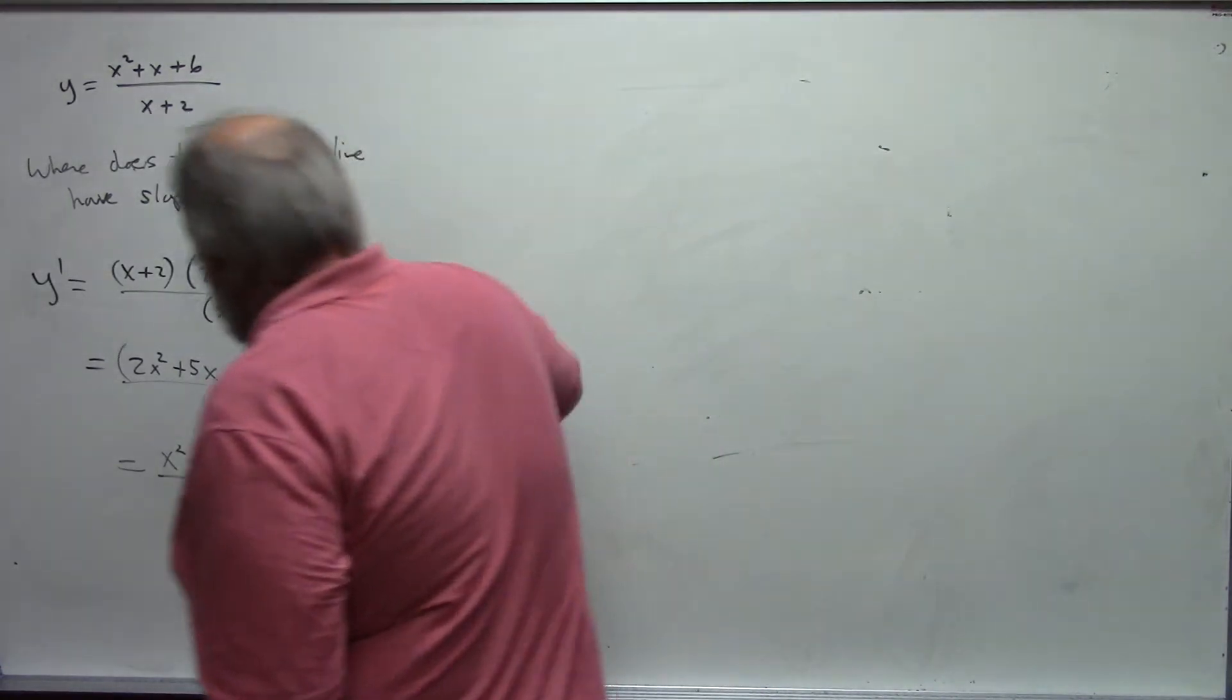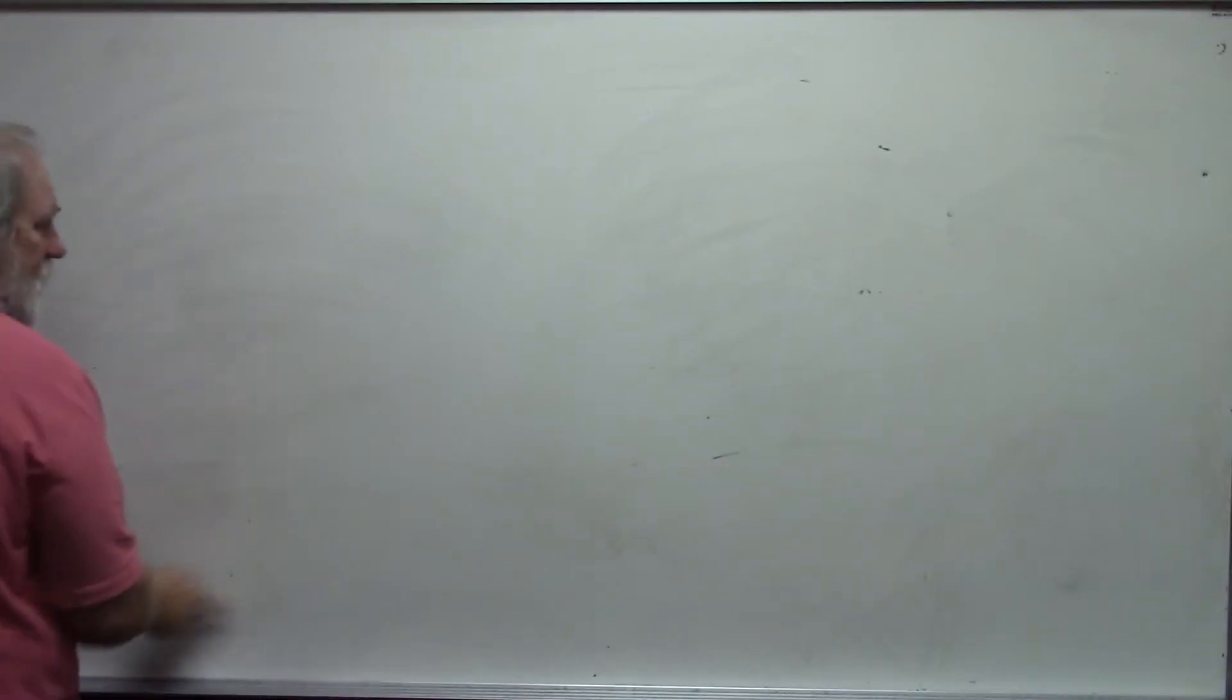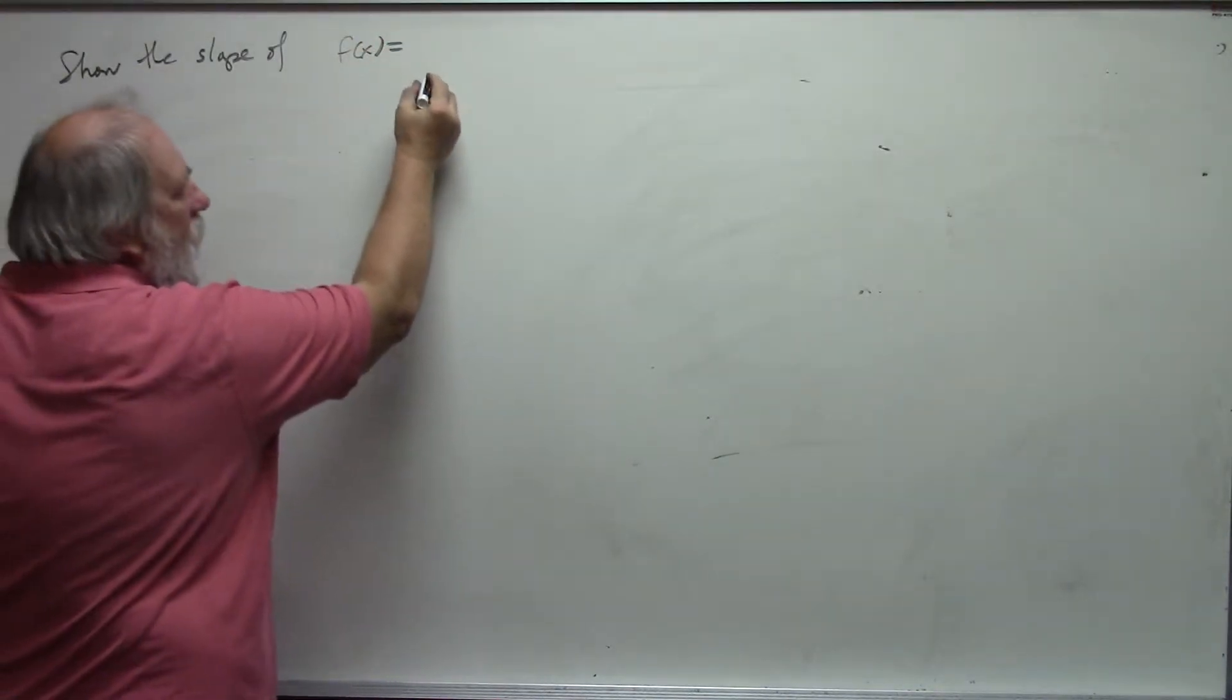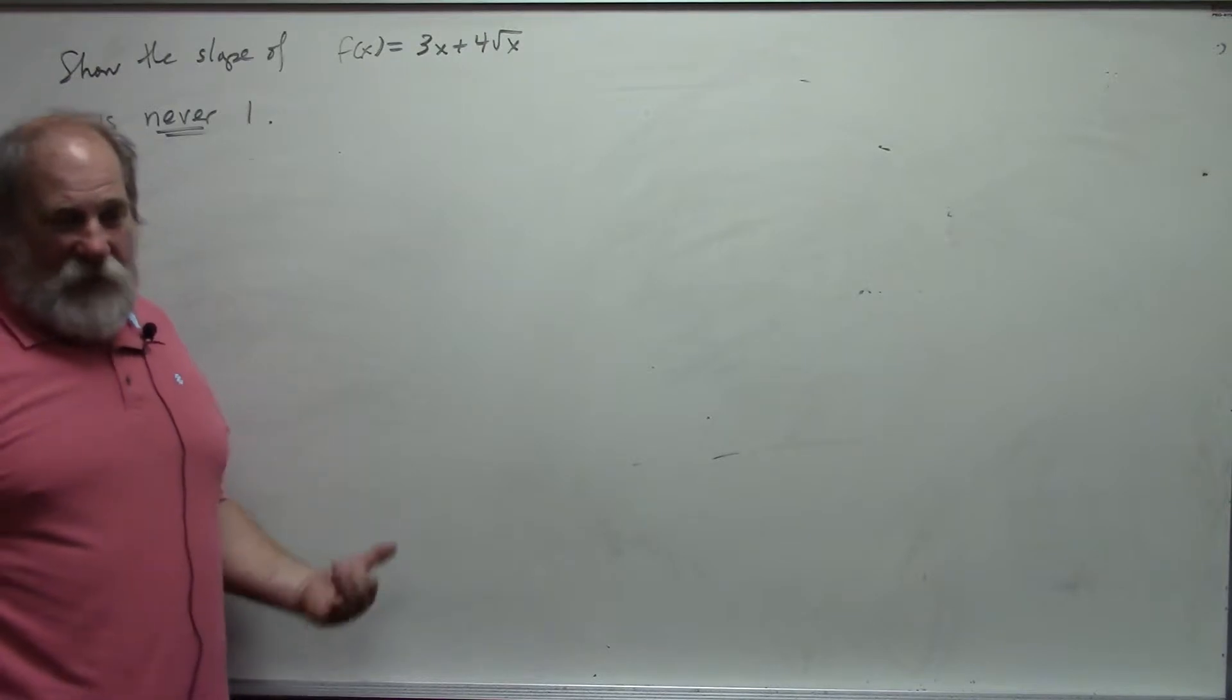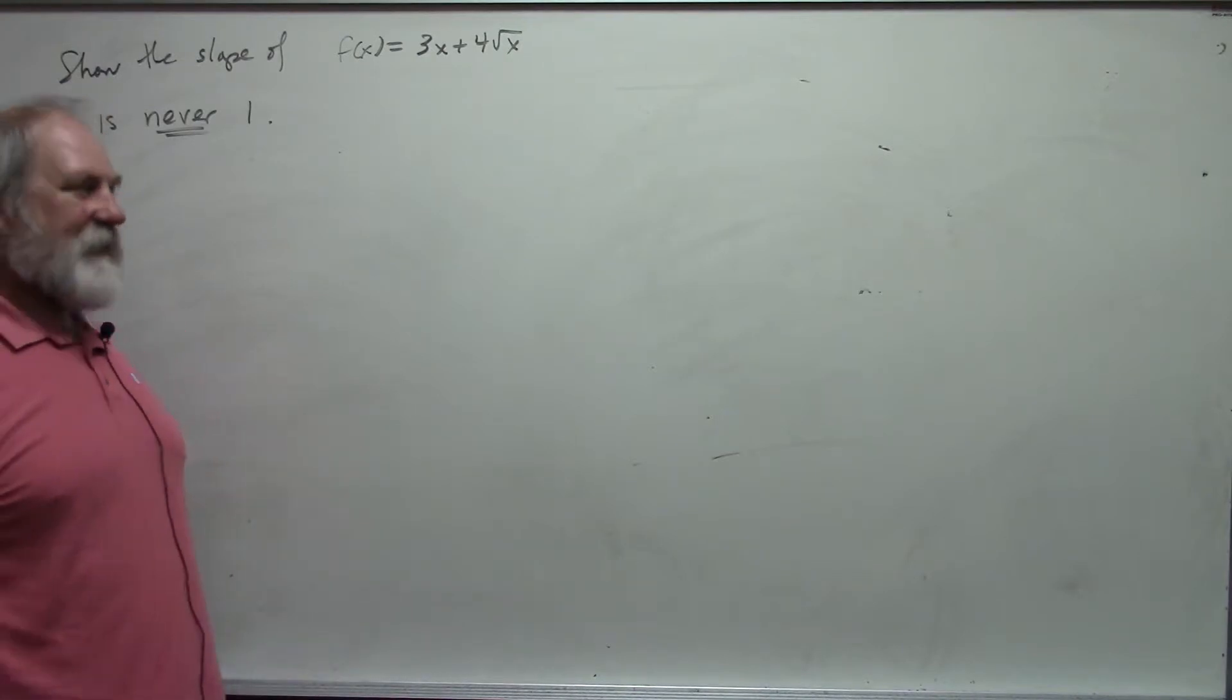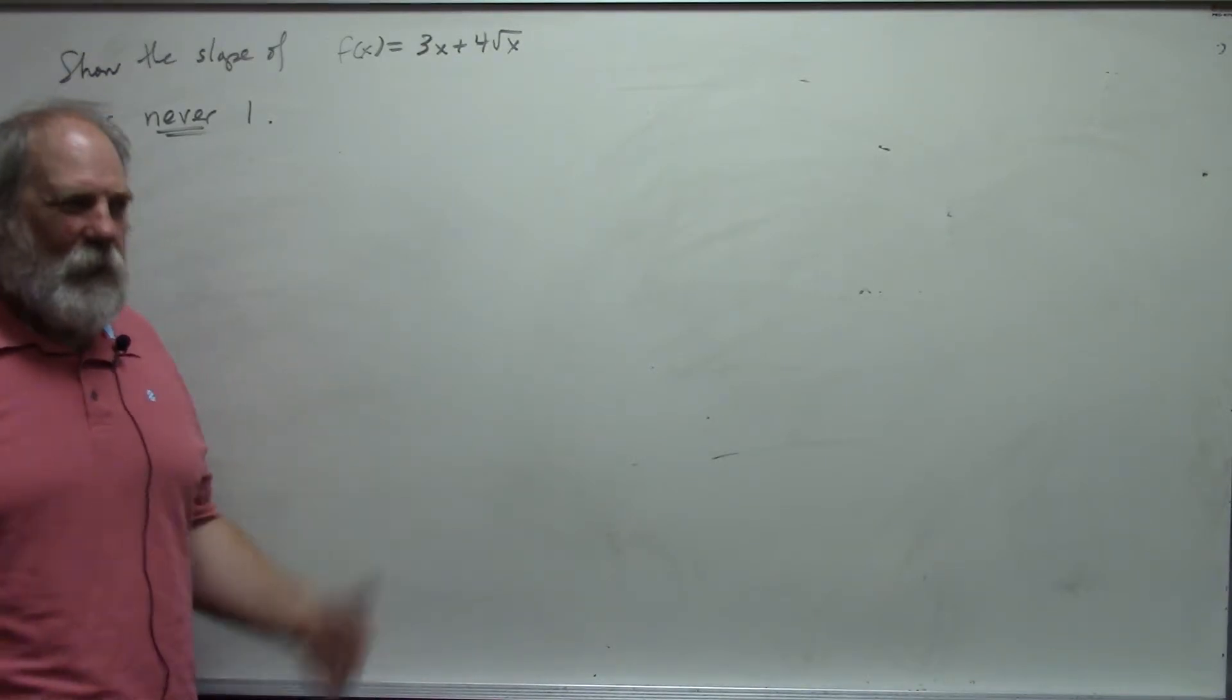Now let me do a couple applications that you haven't seen before. The first is show the slope of f of x equals 3x plus 4 square root of x is never 1. Now, logically here, I'm trying to show something never happens when there's an infinite number of possibilities.